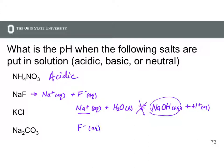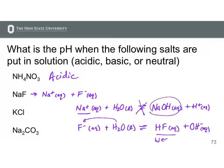For F-, if we put that in water, water can donate a proton to the F- to form HF and OH-. HF is a weak acid, so this equilibrium will occur in solution. This equilibrium produces hydroxide ion, so we should end up with a basic solution.